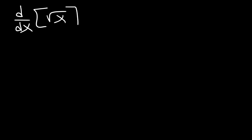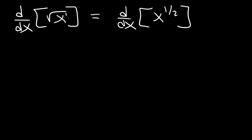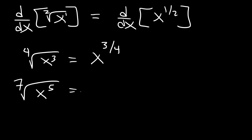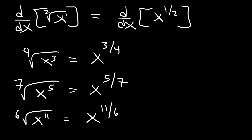Now let's say we have a radical function like the square root of x. To use the power rule we need to rewrite it: the square root of x is x to the one-half. If you don't see an index number on the radical, it's always 2. For example, the fourth root of x cubed is x to the three-fourths; the seventh root of x to the fifth is x to the five-sevenths; and the sixth root of x to the eleventh is x to the eleven-sixths.